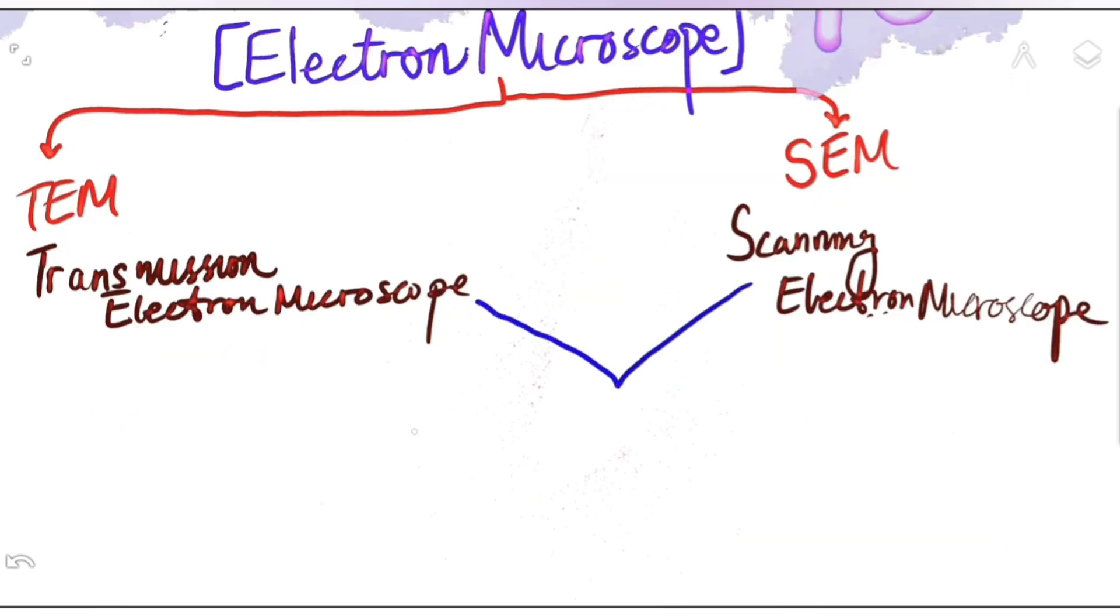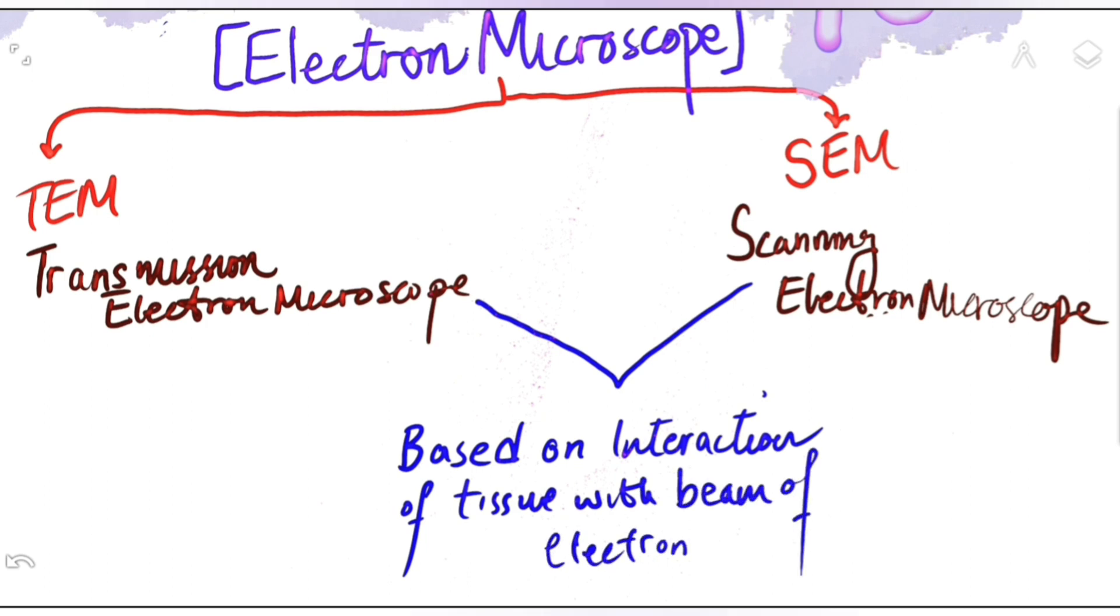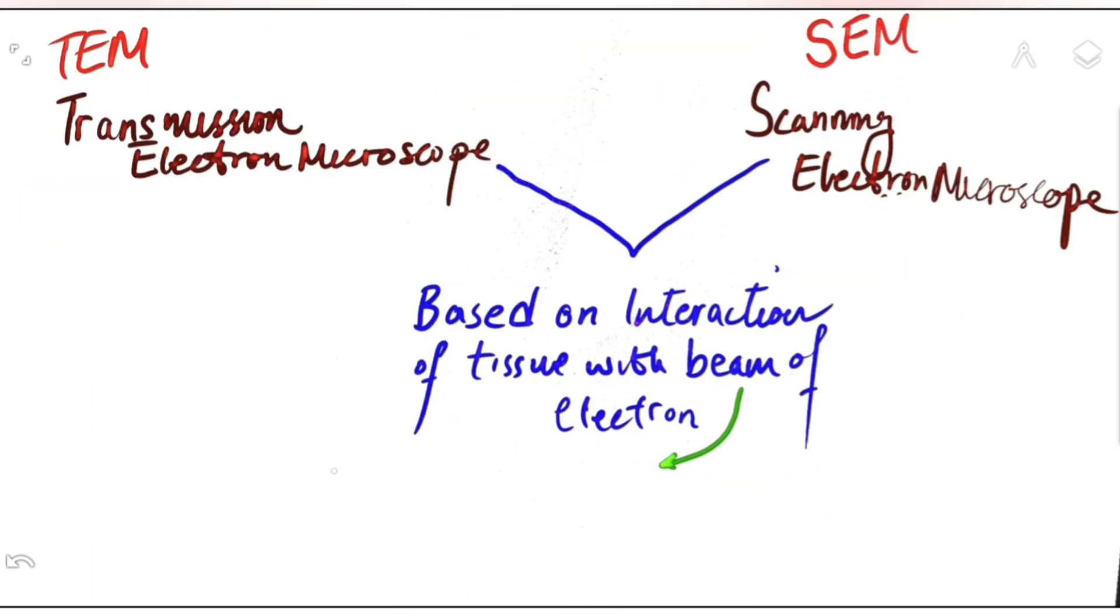Both SEM and TEM are based on the interaction of the tissue under study with beams of electrons. Beams of electrons in general have much shorter wavelength compared to the wavelength of light, whether it is visible or non-visible.